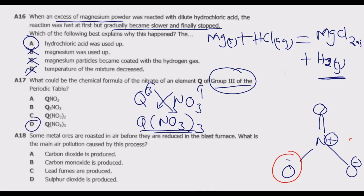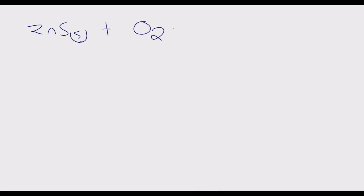Let us look at question A18. Some metals are roasted in air before they are reduced in the blast furnace. What is the main air pollution caused by this process? Two metals are roasted when extracting them from their ores: zinc from zinc blende, and copper from chalcopyrite. For zinc, roasting zinc blende in air gives zinc oxide plus sulfur dioxide gas.